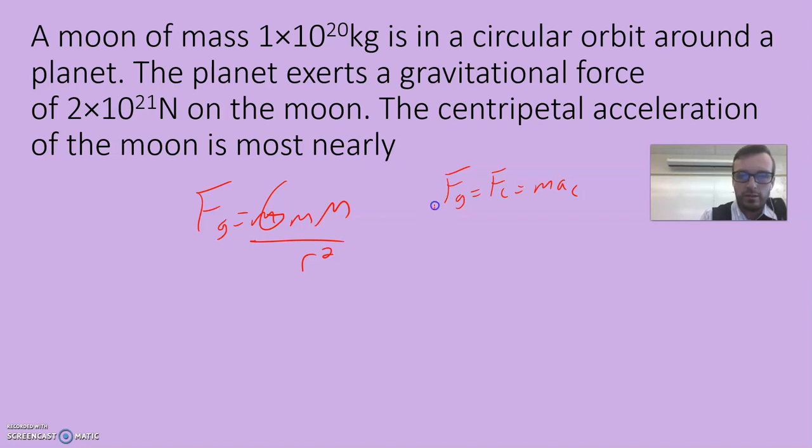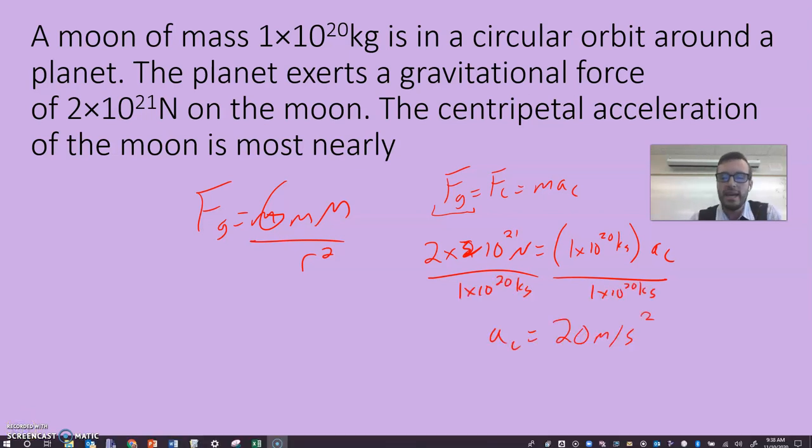If I know this guy right here, the gravitational force on the moon, so two times 10²¹ Newtons equals times 10²⁰ kilograms times ac. Just divide both sides by that and get your answer. Fc equals mac. We know the force of gravity exerted on the moon, so we plug that in for Fc. We know the mass of the moon, so we plug that in for mass, and we get the acceleration. Centripetal acceleration is 20 meters per second squared on that moon.